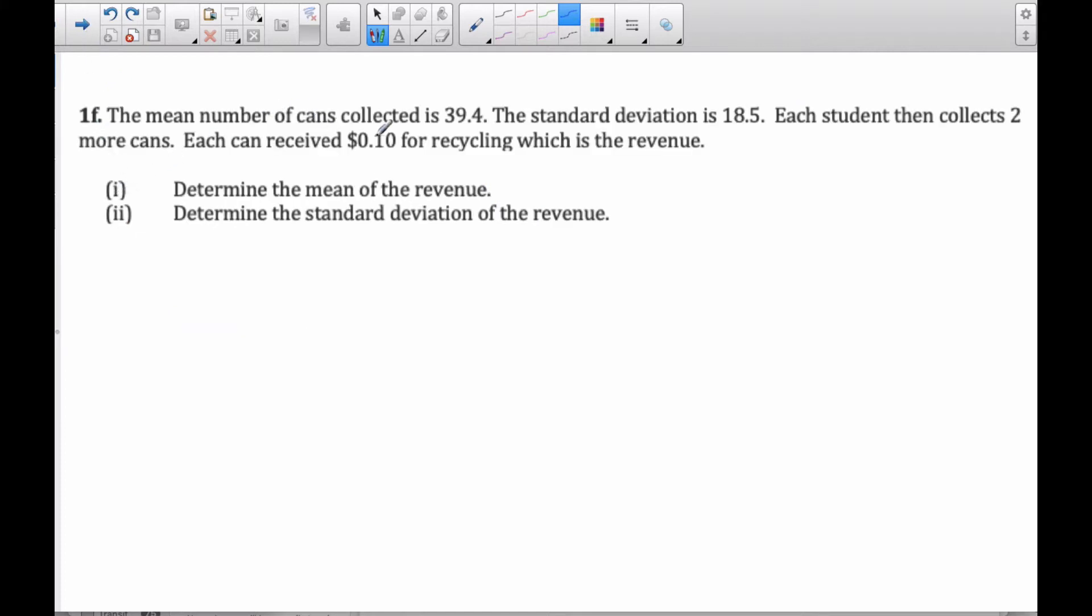And finally, the mean number of cans collected is 39.4. And the standard deviation is this. Each student collects two more cans. Each can receives this much for recycling, which is the revenue. Okay? Determine the mean of the revenue. So I know now that as opposed to 39.4, the new mean is 41.4 cans is what people are collecting. But I want the revenue, so I'm going to multiply this value by 10, and it's by 10 cents, which will be then dollars 4.14.